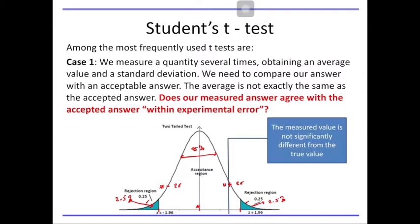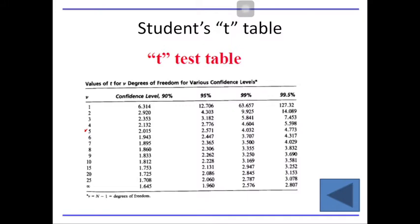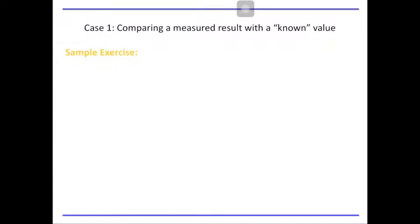One way to determine whether or not there is a systematic error is to compare your value to that of the standard. Suppose you have a standard value with measurement mu, around the mean value. If our measurement falls within the acceptance region of the standard deviation, then our measurement is acceptable and most likely there is no systematic error. We also have a t-test table when making use of the T-test. In the first case, we compare our measured result with a known value — what we call a standard reference material.